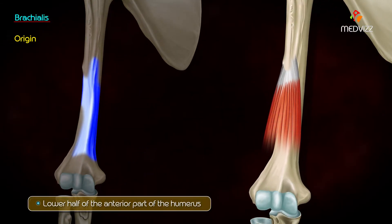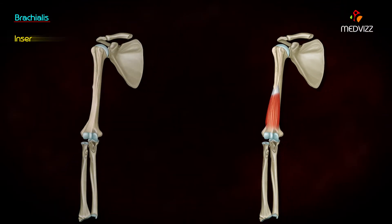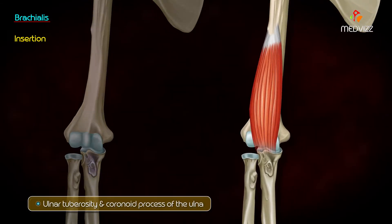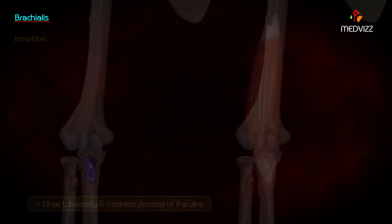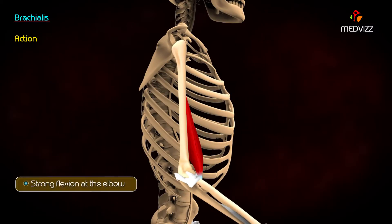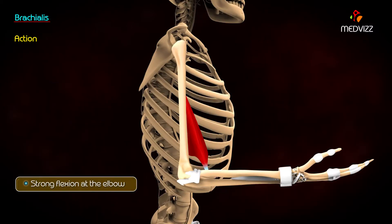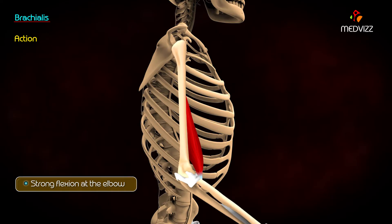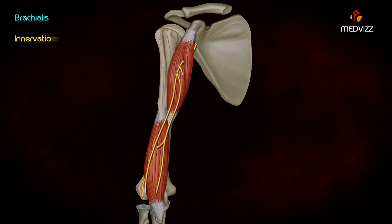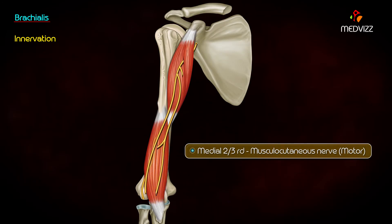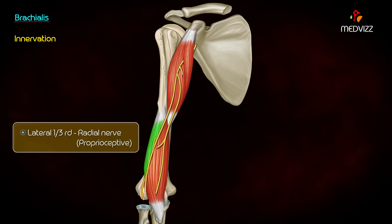Brachialis originates at the lower half of the anterior part of the humerus. It is inserted at the ulnar tuberosity and coronoid process of the ulna. Its action is strong flexion at the elbow — it is also known as the workhorse of the elbow joint. The medial two-thirds of brachialis is innervated by the musculocutaneous nerve (motor), and the lateral one-third by the radial nerve (proprioceptive).